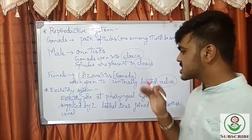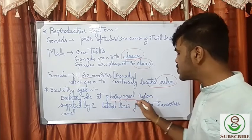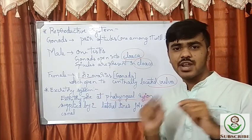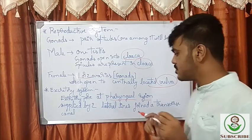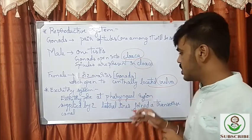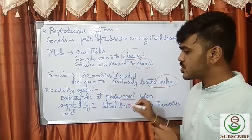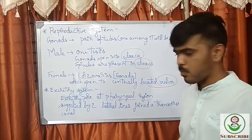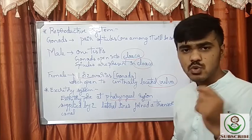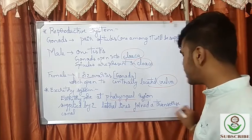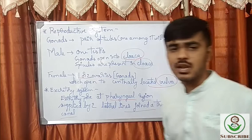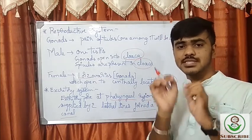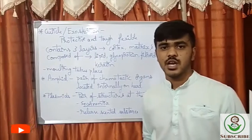Regarding the excretory system, there is an excretory pore at the pharyngeal region. At that pharyngeal region there will be a small excretory pore supplied by two lateral lines joined by a transverse canal, through which excretion occurs.